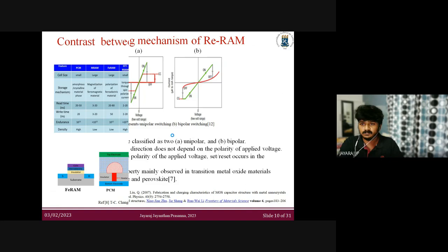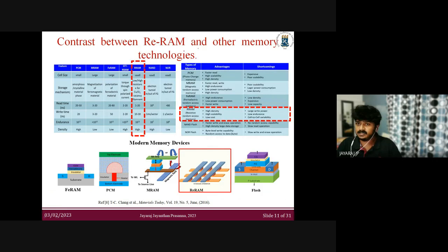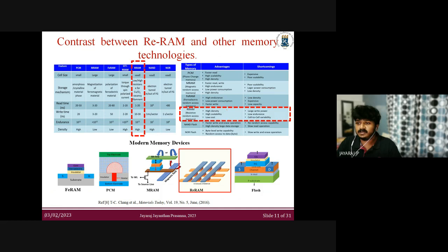There are many memory technologies currently available, but why are we choosing resistive random access memory? Other technologies have high read/write speed and high density, but scaling and high fabrication cost are major constraints. That is the reason behind the demand for RERAM — because we can fabricate it using a very low-cost method.